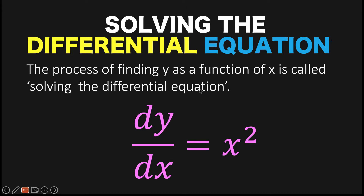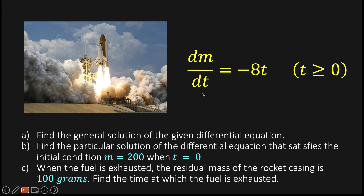Differential equations have a lot of applications in real-life situations because oftentimes we know the change — because changes are observable — but we do not know the function that caused that change. An example would be this rocket. We can observe that the change in mass with respect to the change in time equals negative 8 times t, where t is the time in seconds and t is greater than or equal to 0. If we want to find the function m of t given this scenario, then we are solving a differential equation.